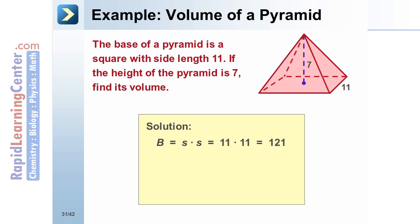B equals 121. Substitute into the volume formula: V equals one-third times 121 times 7. Simplify to find the volume of the pyramid, which is about 282.33.